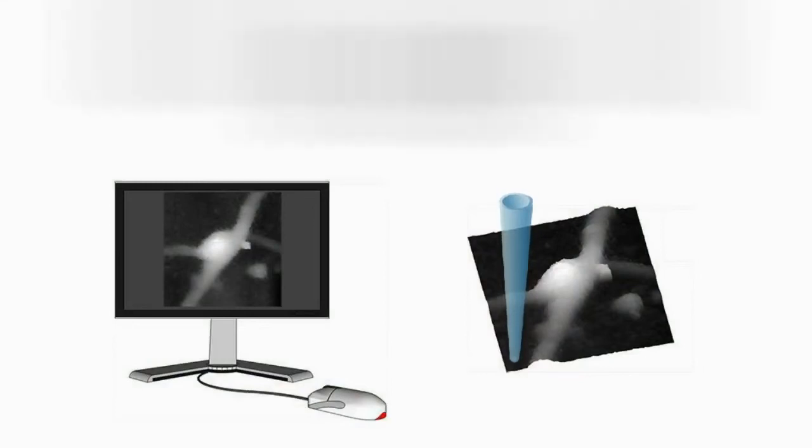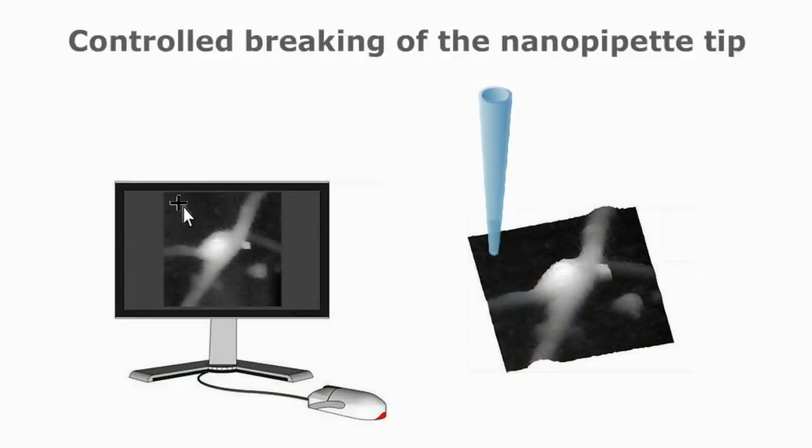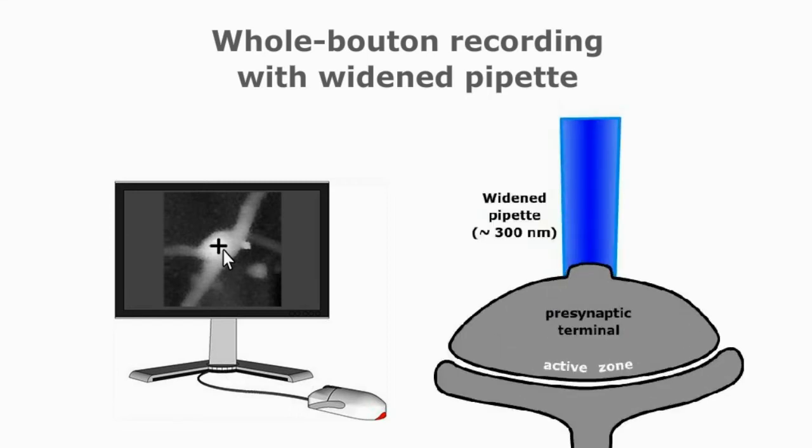To overcome this limitation, we came up with an idea of controlled widening of the nanopipette tip. Immediately after high-resolution imaging, we positioned the nanopipette into a cell-free area and increased the tip diameter by controlled breaking of the nanopipette tip against the glass coverslip. We then repositioned the modified pipette onto previously identified synaptic terminals to form a gigaseal. Now we can rupture the membrane and form a whole bouton patch-clamp recording configuration.